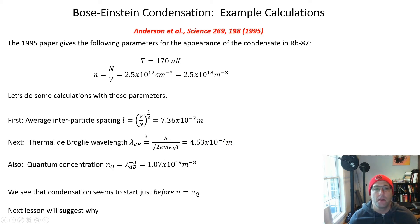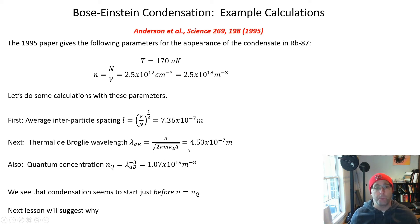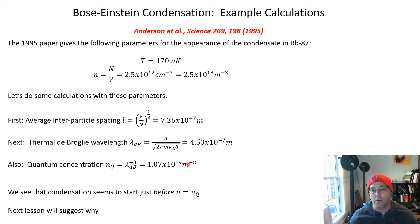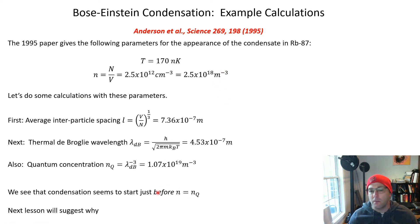The thermal de Broglie wavelength allows us to define the quantum concentration n_Q — a parameter that appears in the Sackur-Tetrode expression for entropy of an ideal monatomic gas — which is just one over the thermal de Broglie wavelength cubed, giving about 1.1 × 10^19 per cubic meter. According to the paper, condensation starts at this density, and it seems to start when the density of atoms is just a little bit below the quantum concentration of the gas at this temperature.